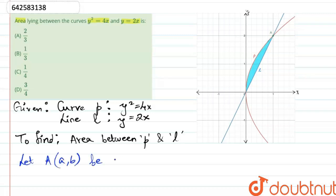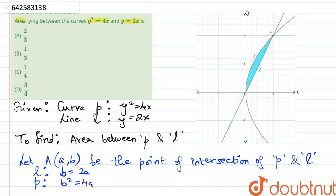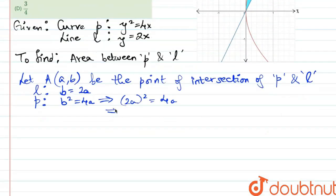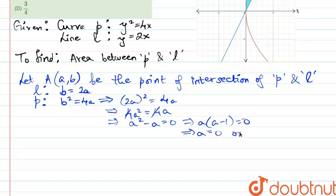Now let the point of intersection of the curve and the line be A of coordinates (a, b). Then according to the equation of the line, b = 2a. Inserting this in the equation of the parabola, b² = 4a, this means that (2a)² = 4a. Cancelling the fours and subtracting a from both sides we get a² - a = 0, or a(a - 1) = 0, which means that either a = 0 or a = 1.